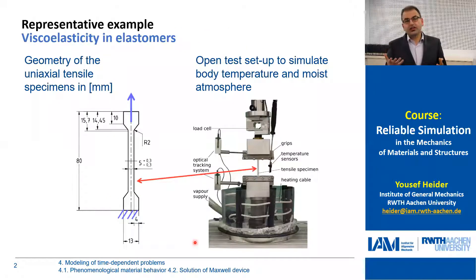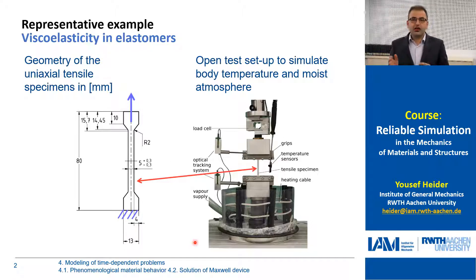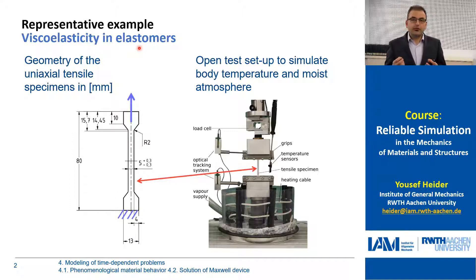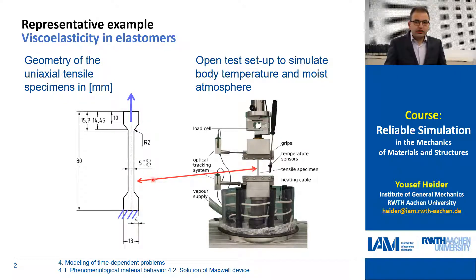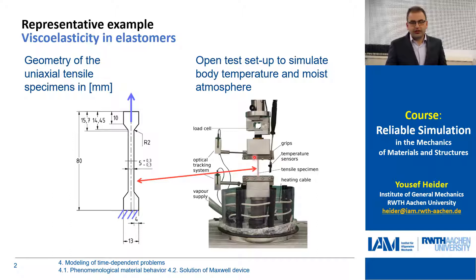Let me start by giving you some practical examples of how we classify the behavior of certain materials. These pictures are from our own work, from our laboratory, where we were investigating the behavior of elastomers. Elastomers are a special type of rubber, and they show viscous behavior. We took specimens, cut them in a bone-shaped form, and put them in a uniaxial testing device, fixed from the bottom and from the top.